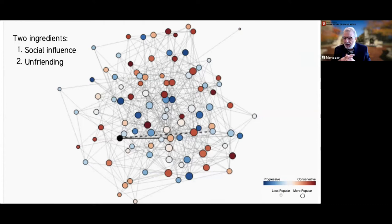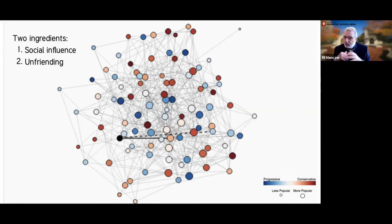There are two key ingredients in this model. One is social influence — when people post, they post things that reflect their own opinions. When you're exposed to an opinion not too different from yours, you may change your opinion a little bit, going in the direction of what you've been exposed to. The opinions are represented by the colors of the nodes. Initially they are spread across a one-dimensional spectrum, simplified as from progressive to conservative, uniformly distributed.